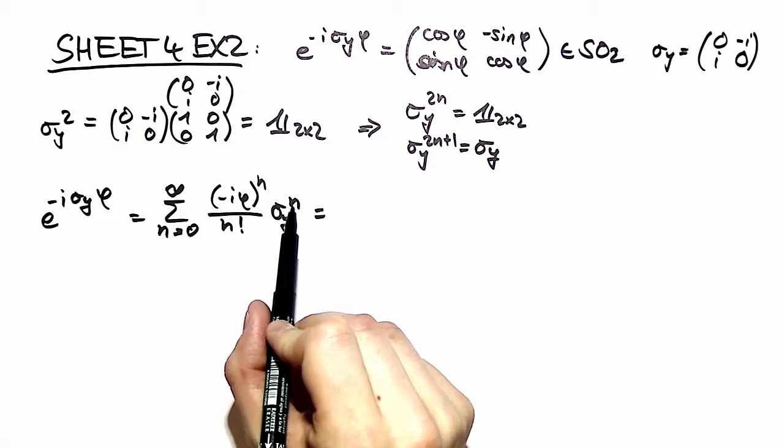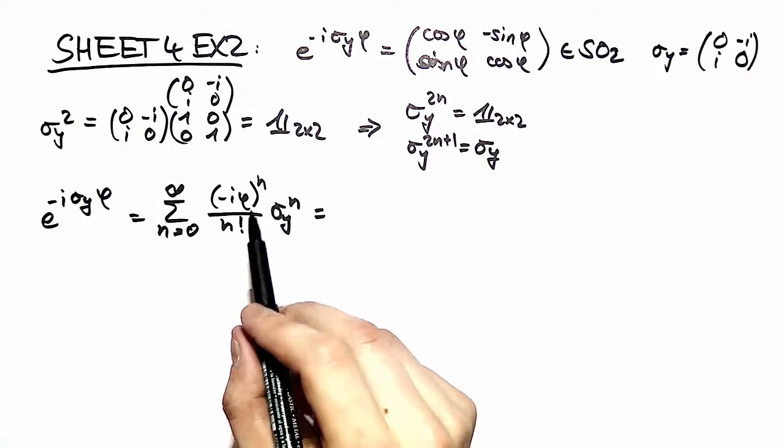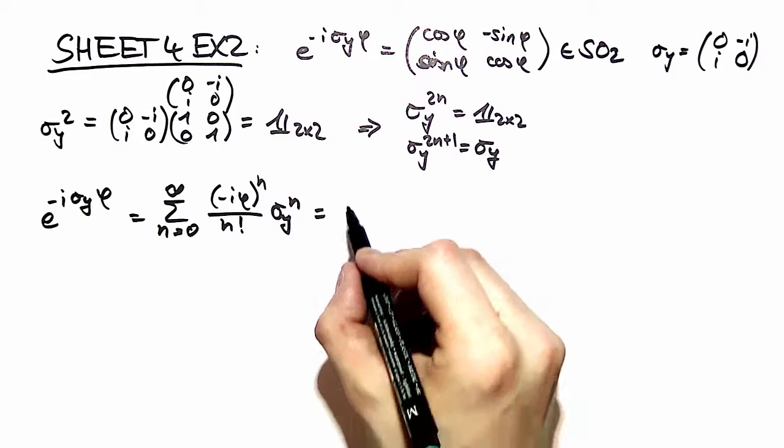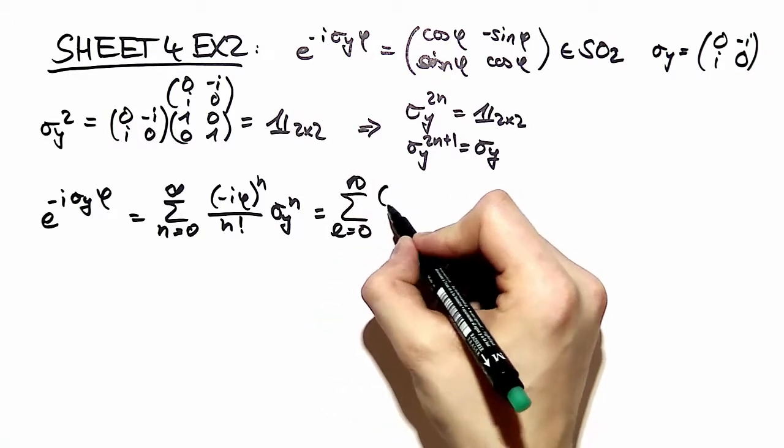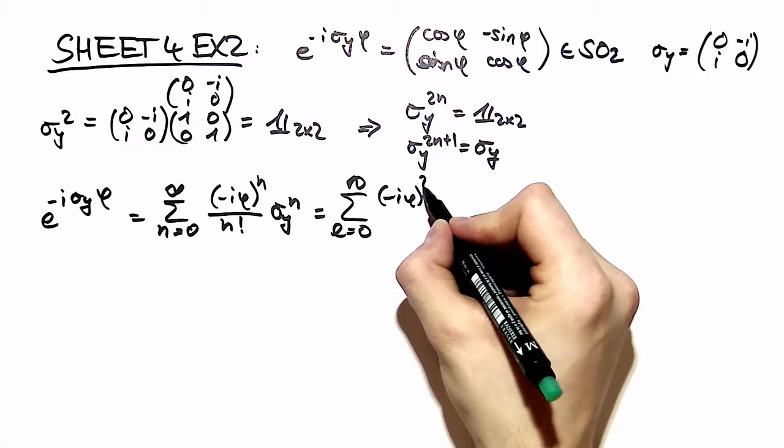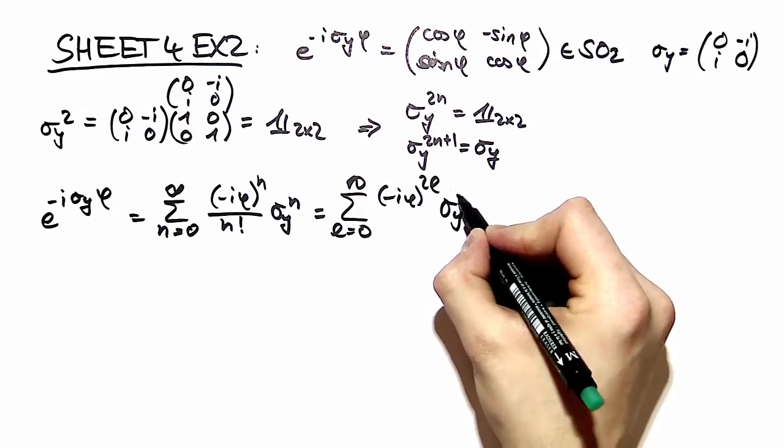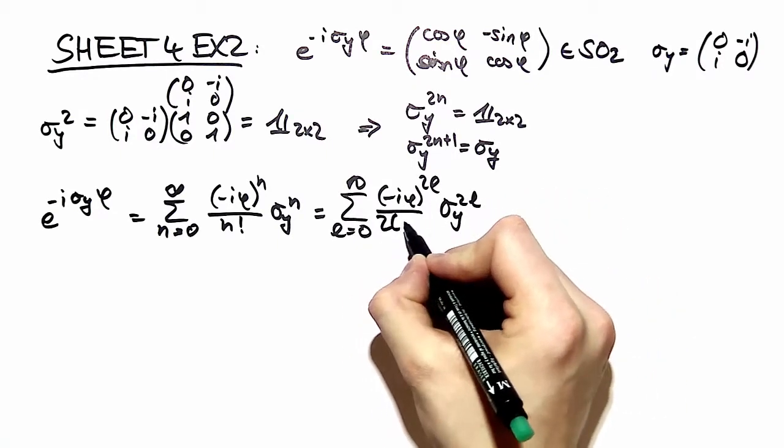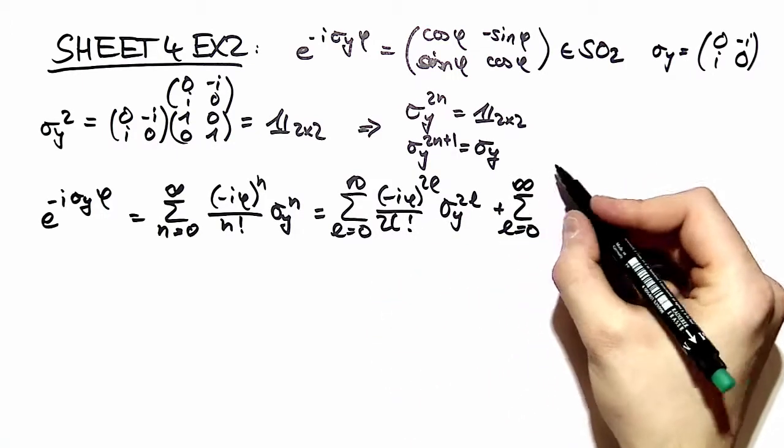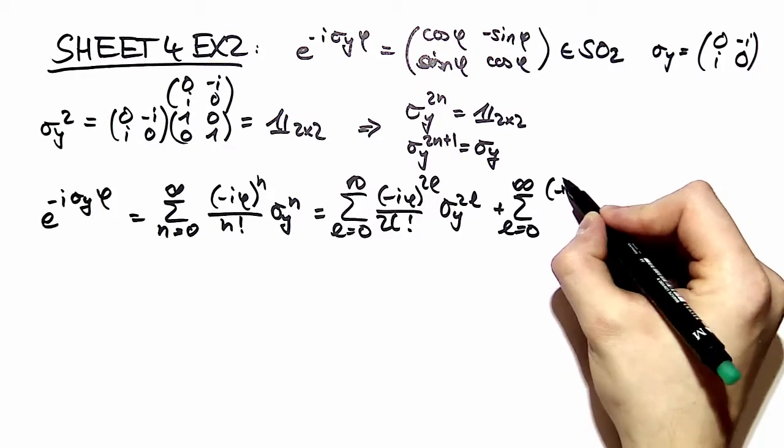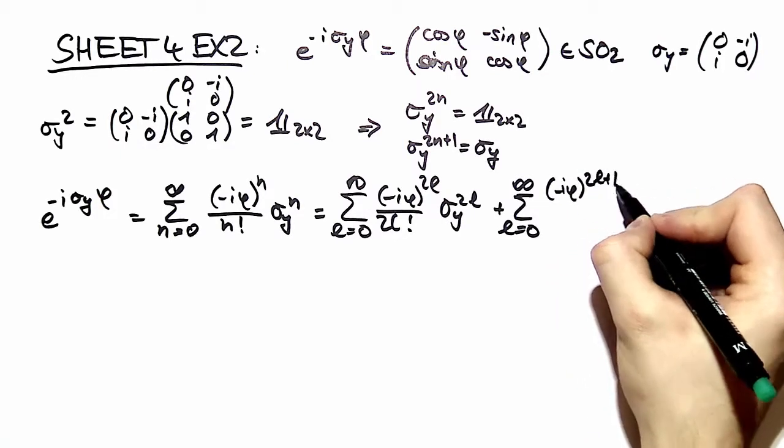We do a variable substitution. We take l to be equal to two times n and we obtain two different sums. Namely the one where you have sigma y times two l and the one where you sum over only over odd numbers, two l plus one.